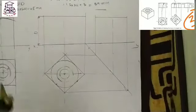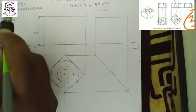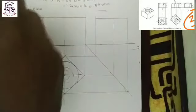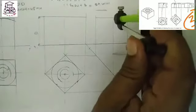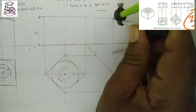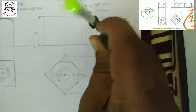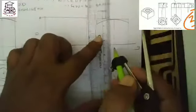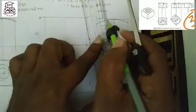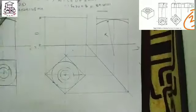For the curves, take R equal to 2d, that means 48 mm. With the compass, draw the arc. The dimension of the arc equals R, where R equals 2d.